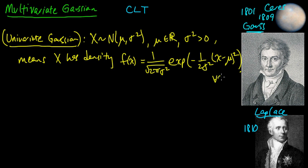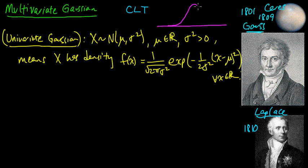This is the density function for a univariate Gaussian, defined on the whole real line. Everybody knows what the univariate Gaussian looks like — it's this bell-shaped curve. Mu is the center; it could be anywhere, you can shift it back and forth. The width corresponds to the standard deviation, which is the square root of the variance. That's the univariate Gaussian.